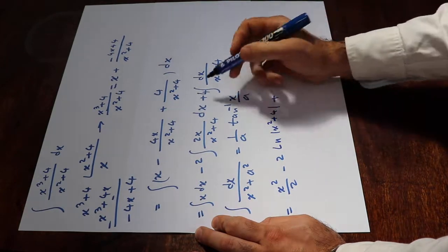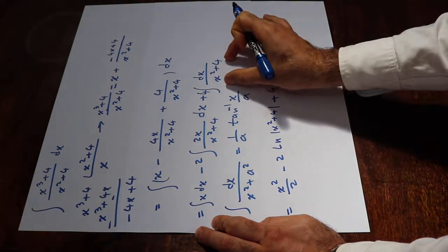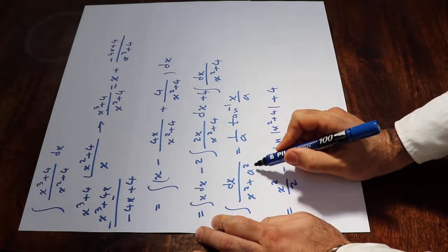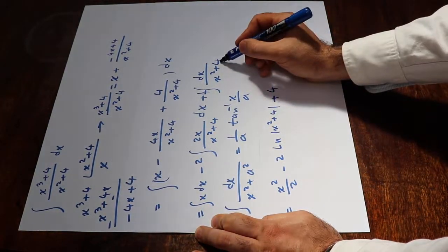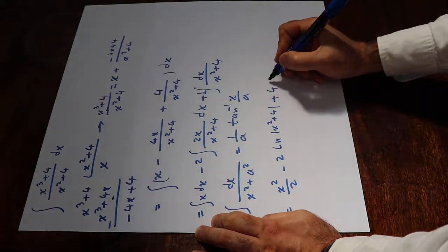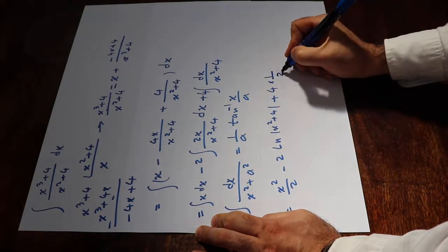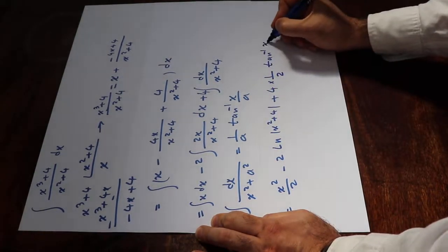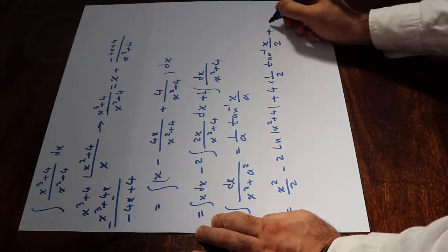Therefore that integral equals ln(x² plus 4), plus 4 times the integral evaluated using the arctan formula. Here a equals 2, because 2² equals 4, so this term becomes 1 over 2 times arctan(x over 2), plus C.